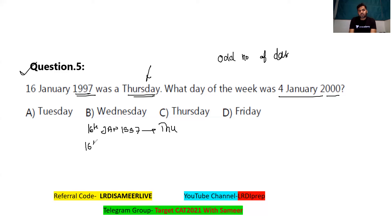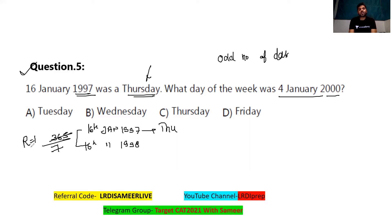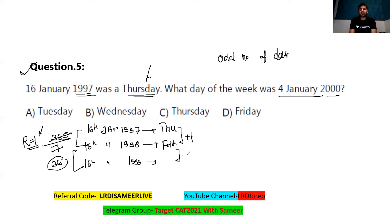So on 16th January 1998, the day would be Thursday plus one — which is Friday. Moving to 16th January 1999, again 365 days pass and the odd days are one, so the day would be Saturday. Moving to 16th January 2000, again 365 days pass with one odd day, so it becomes Sunday.